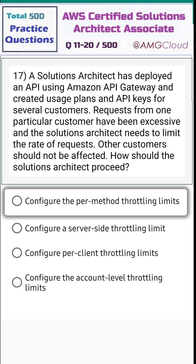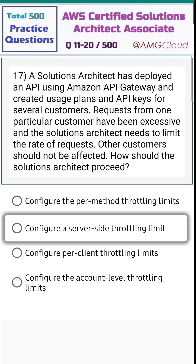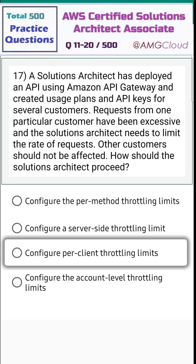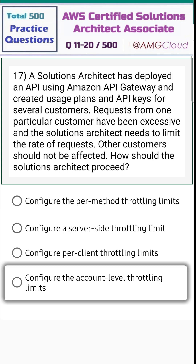Options: configure per-method throttling limits, configure a server-side throttling limit, configure per-client throttling limits, or configure account-level throttling limits.